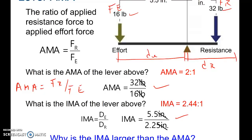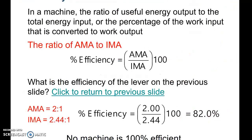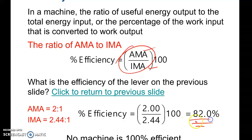The question becomes: why is the IMA larger than the AMA? Remember, IMA is the ideal, perfect scenario, while AMA is not. When the AMA is less than the IMA, that tells us there is friction in our system. Efficiency takes the ratio of AMA divided by IMA — the majority of machines will not be 100% efficient. If they were, we would have no frictional losses. Efficiency basically compares the actual scenario to the ideal scenario.